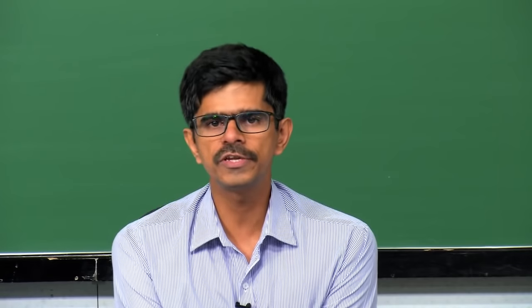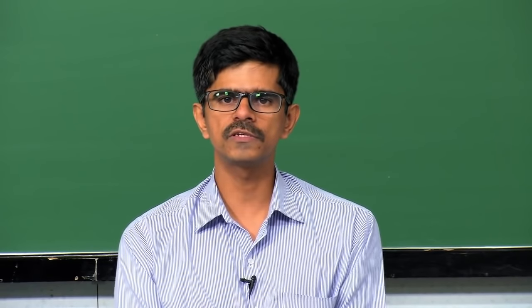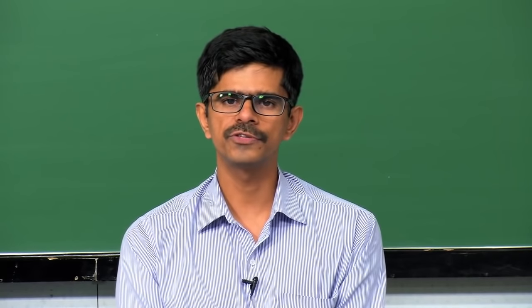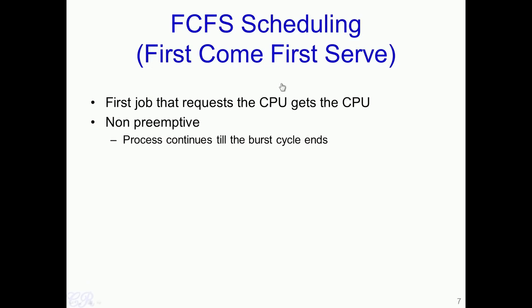We will now look at several scheduling algorithms, starting from the simplest — the First Come First Serve (FCFS) scheduling algorithm — and proceeding to more complex ones. In FCFS, the first process to request the CPU is allocated the CPU; in other words, the first process to enter the ready queue is scheduled. This is a non-preemptive scheduling algorithm, meaning the process continues to execute until its burst cycle completes.